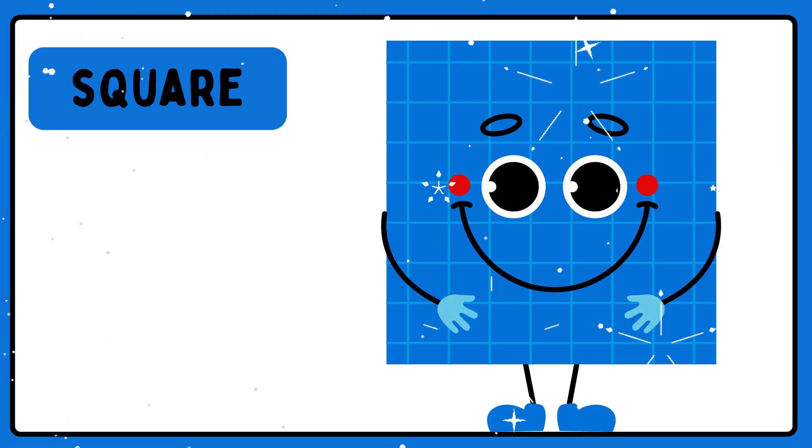A square. This is a square. Square has four sides and four corners. All the sides of a square are equal.